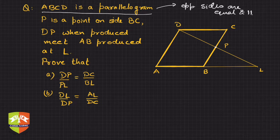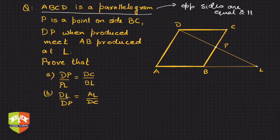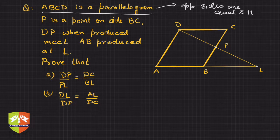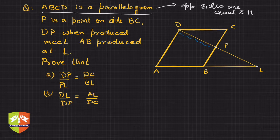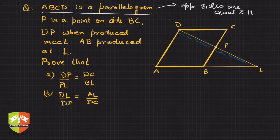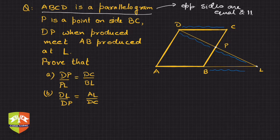DP when produced meets AB produced at L. Now what you need to prove is that DP upon PL is equal to DC upon BL. DC is nothing but AB, so while reading the question itself it is pretty clear that this is going to be true.